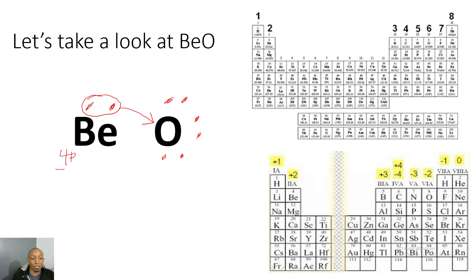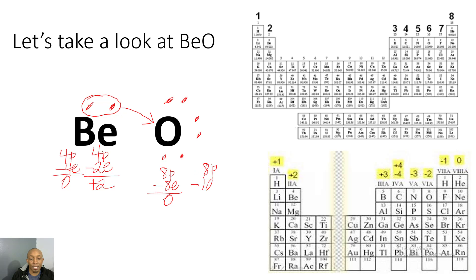Beryllium had four protons and four electrons giving it a charge of zero, but when it gave its two valence electrons to oxygen, beryllium now has a plus two charge — confirmed on the oxidation number chart. Oxygen had eight protons and eight electrons with a zero charge, but after gaining two electrons it now has a negative two charge. The plus two and negative two charges cancel each other out, which is why you only see one beryllium and one oxygen in the formula BeO.